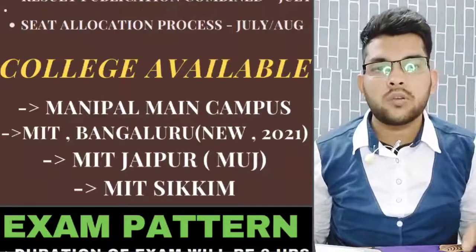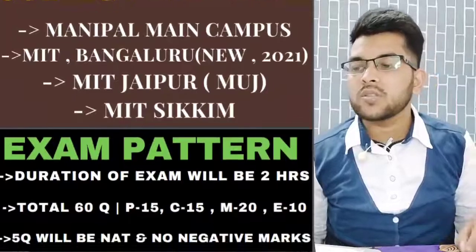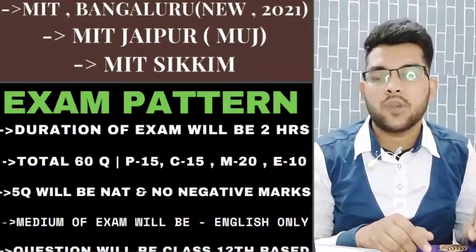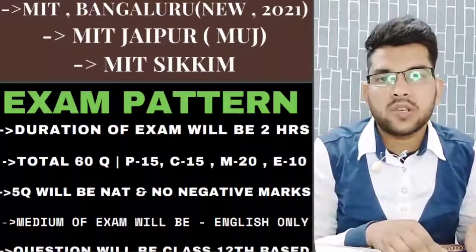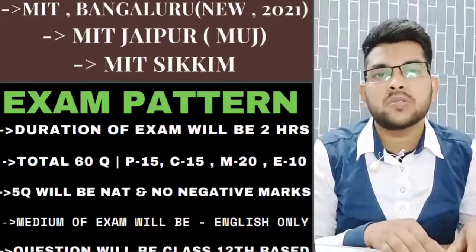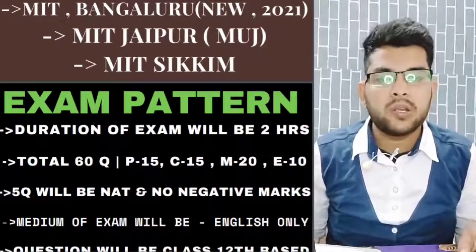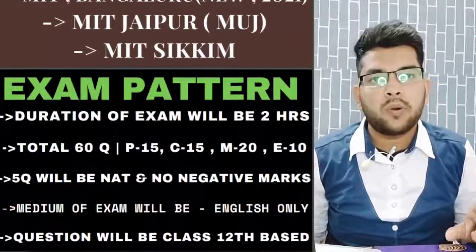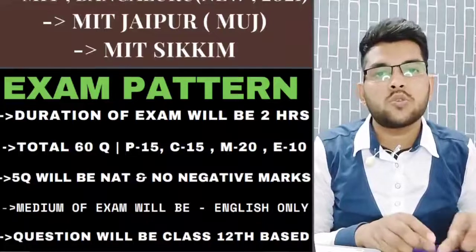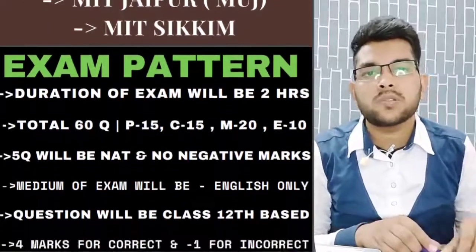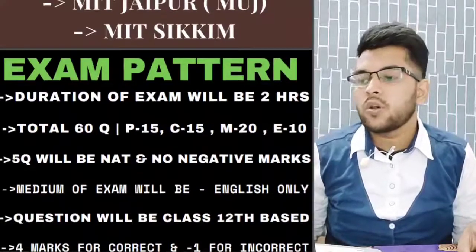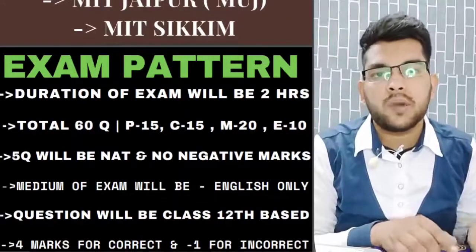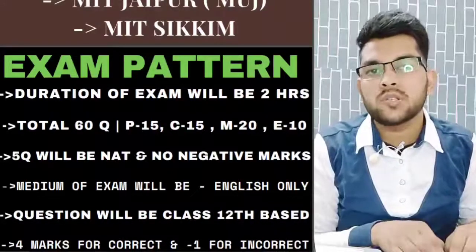Now let's talk about the exam pattern, which is the most important thing to know for preparation. The duration of the exam is two hours. The total number of questions is 60 — 15 from physics, 15 from chemistry, 20 from mathematics, and 10 from English. Among the 60 questions, 15 will be numerical type — five each from physics, chemistry, and mathematics. The medium of the exam is English only. The marking scheme is +4 for each correct answer and -1 for each incorrect answer, except for numerical type questions which have no negative marking.